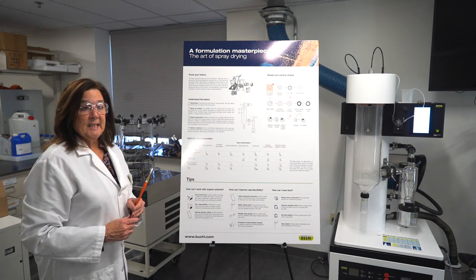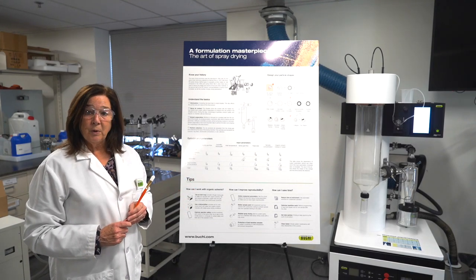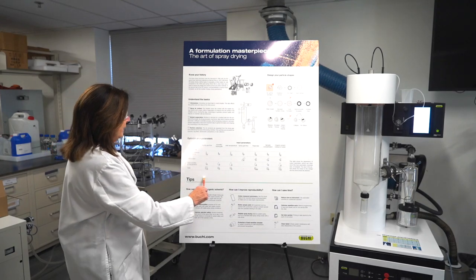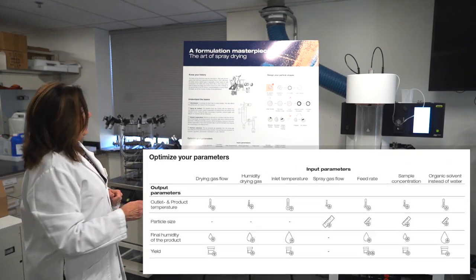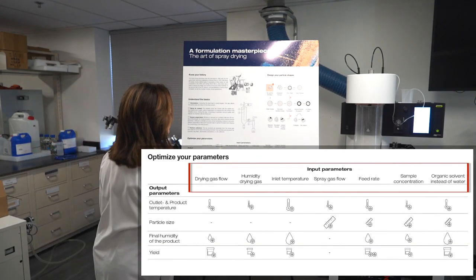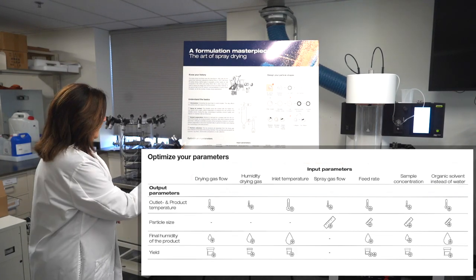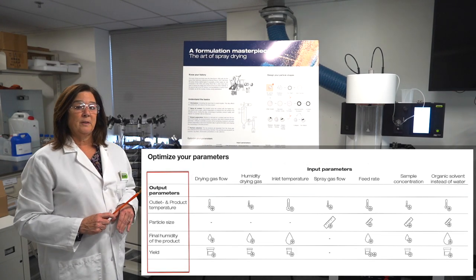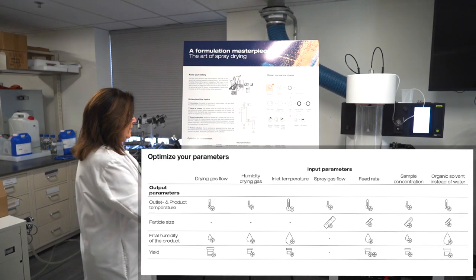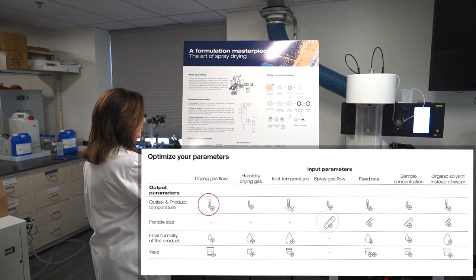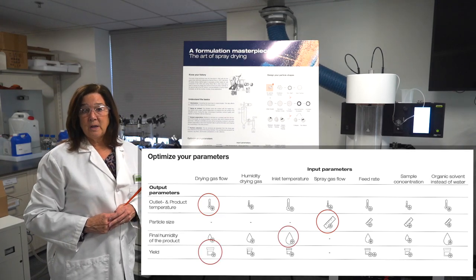Spray drying success is a mix of your formulation due diligence and the process parameters we employ. We have a table here which talks about how to choose the parameters. Across the top are what I can control on my instrument or my formulation itself, and down the side are the outputs — the attributes I want my particles to have. We have nice little icons of thermometers, rulers, little droplets, and collection vessels for our yields.